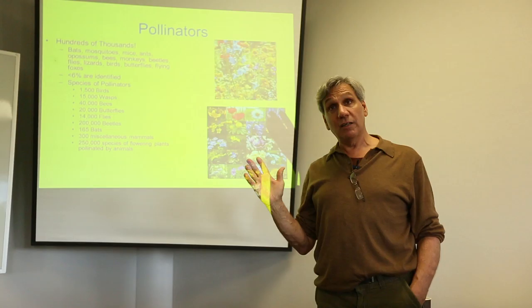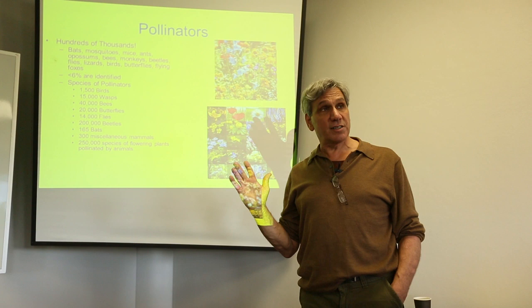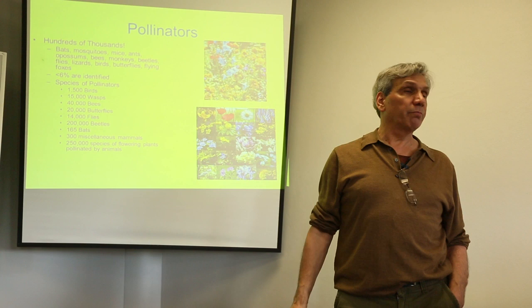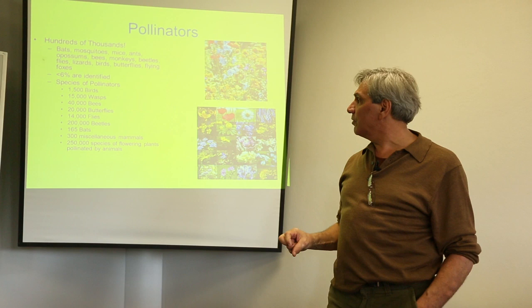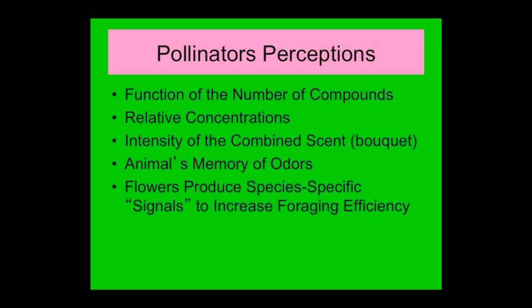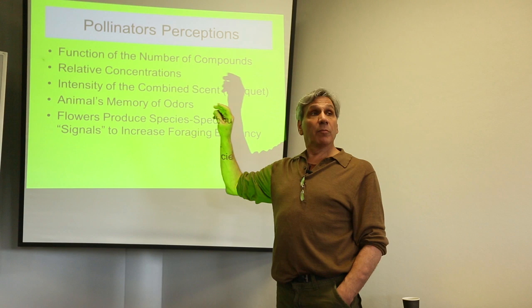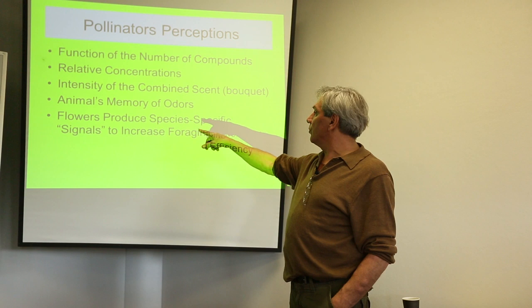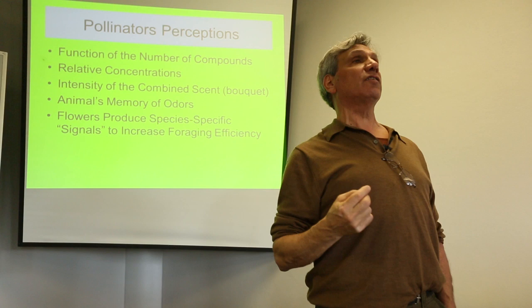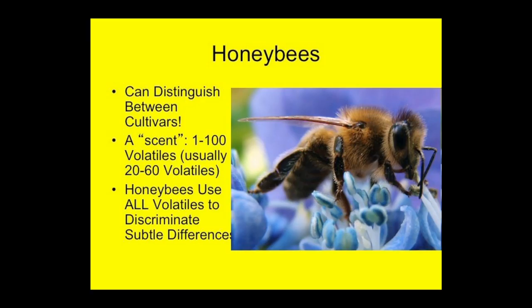Pollination is absolutely essential, and what a lot of people don't realize is it's not just the honeybee that is a primary pollinator. Bats, mosquitoes, mice, ants, beetles — probably the biggest group of pollinators — birds, wasps, butterflies, and miscellaneous mammals are all involved. Pollinator perception is a function of the number of compounds that come out of the blossoms, relative to the concentrations, the intensity of the combined scent or bouquet, and the memory that particular pollinator has of the odors.